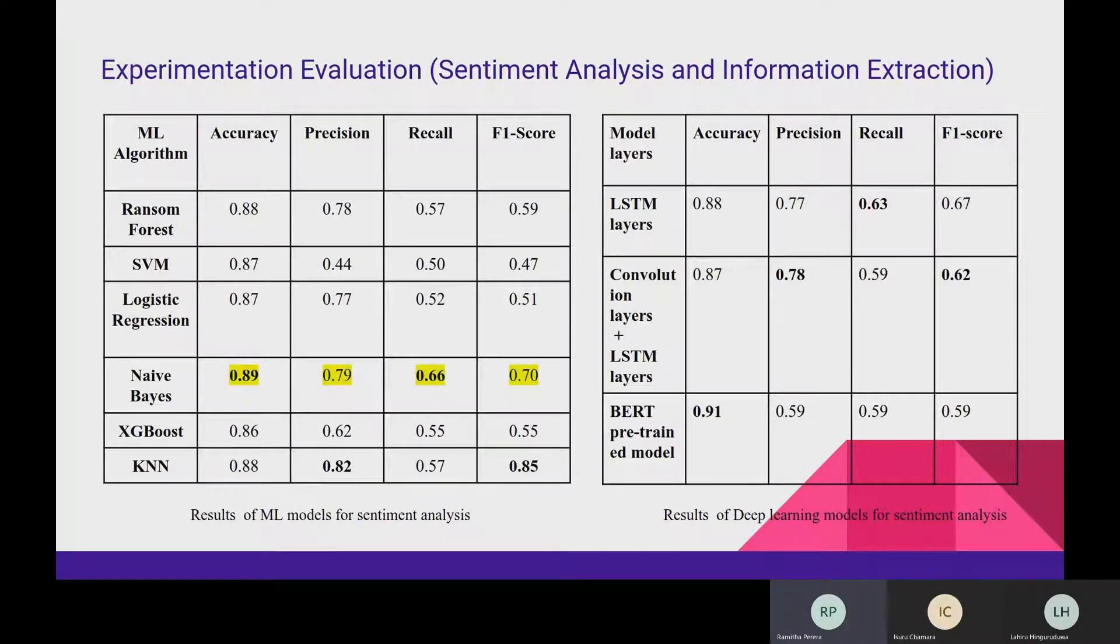The next two tables show the evaluation results of the sentiment analysis system which used machine learning and deep learning methods. We can observe that from machine learning algorithms, Naive Bayes has the highest accuracy and recall.